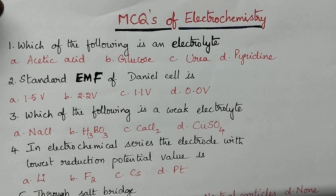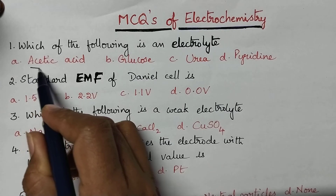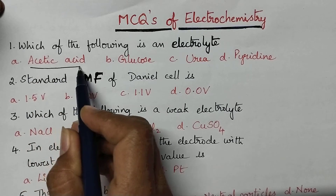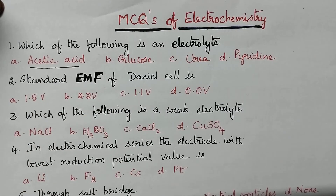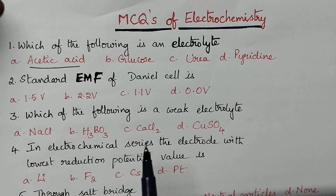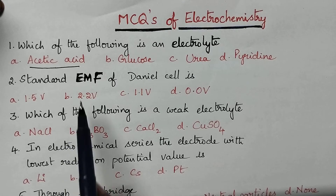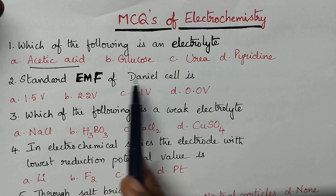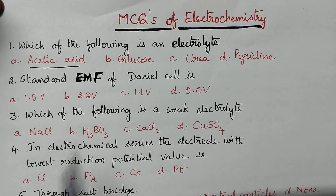Which of the following is an electrolyte? Acetic acid is an electrolyte and the remaining — glucose, urea, and pyridine — are non-electrolytes. What is the standard EMF of Daniel's cell?